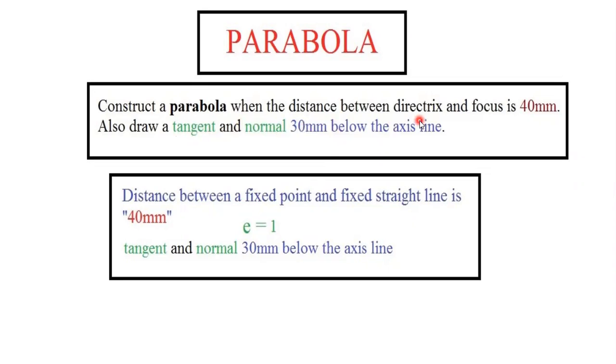Construct a parabola when the distance between directrix and focus is 40mm. Directrix is the fixed line and focus is the fixed point. Draw a tangent and normal 30mm below the axis line. So we need to note two details. First thing is, we need to find which curve it is. It is clearly given that it is parabola. If they haven't given, if eccentricity value is 1, then we can say the curve is parabola. And we need to note the distance between directrix and focus: 40mm.